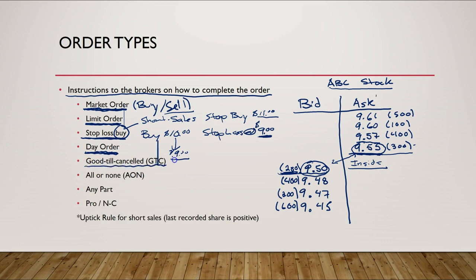Good till cancelled simply means the order stays open until it gets filled. For example, if you placed a limit buy order at $9.45 on the bid side of ABC stock, and it didn't get filled that day, the order remains in the limit book until you go in and manually cancel it. If the market price moves away from your order, it may sit deep in the limit book unfilled for days, but it stays open until you cancel.